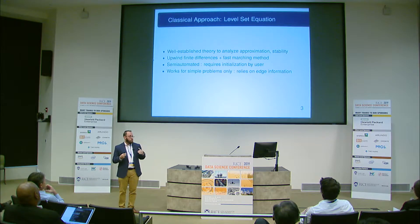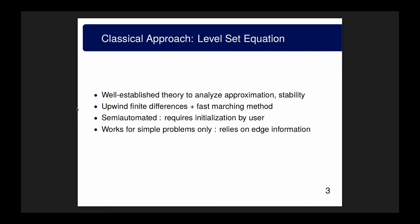So we have a method, it works, and we understand it. Why are convolutional neural networks receiving so much more attention right now? Well, we have to actually solve these problems. We understand the level set equation — its stability, and all the numerical analysis that goes into studying it because it's a differential equation. We solve it using specific schemes we know things about, like an upwind finite difference scheme and a fast marching method.